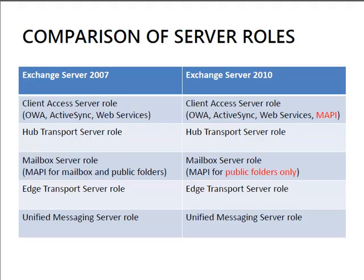The Hub Transport Server has largely remained the same, with some granular enhancements, but from a server role perspective it is largely unchanged. The Mailbox Server role no longer handles MAPI communications for mailboxes but continues to be responsible for direct MAPI connections for public folders. The Edge Transport and Unified Messaging Server roles have also stayed basically the same between those two versions of Exchange.